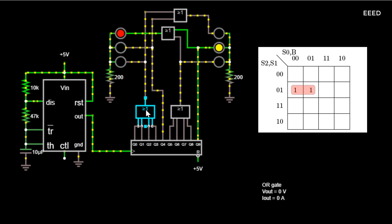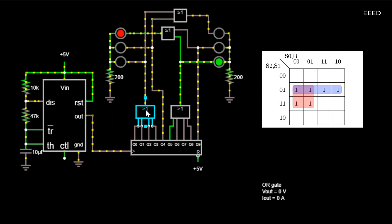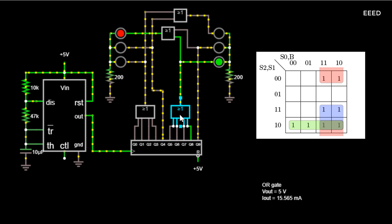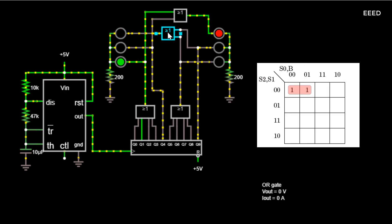From the Karnaugh map for the R signal output, shown below, we get an equation of: (not S0 and S1) or (S1 and not S2). From the Karnaugh map for the G signal output, shown below, we get an equation of: (not S1 and not S2) or (S0 and not S1). From the Karnaugh map for the Y signal output, shown below, we get an equation of: not S0 and not S1 and not S2. Implementation: full Verilog code for the implementation is available in the next section.